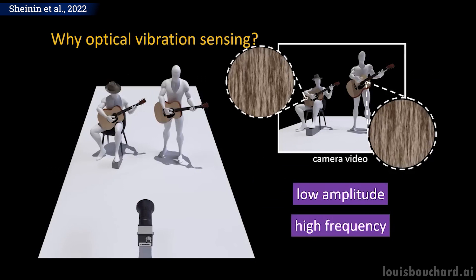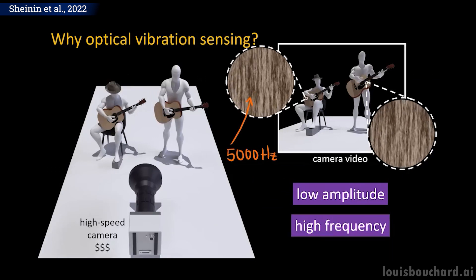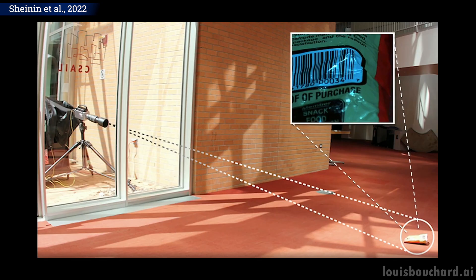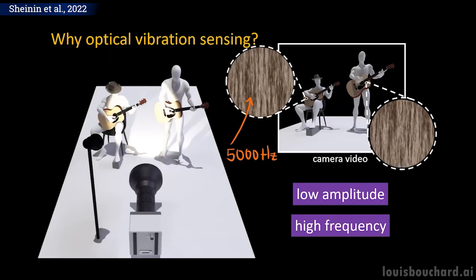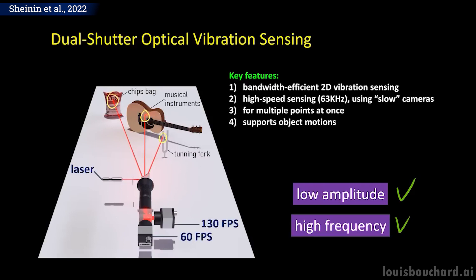Typically, this kind of spy technology, called visual vibrometry, requires perfect lighting conditions and high-speed cameras that look like a camouflaged sniper to capture high-speed vibrations of up to 63 kHz. Here, they achieve similar results with sensors built for only 60 and 130 Hz. And even better, they can process multiple objects at once. Still, this is a very challenging task requiring a lot of engineering and great ideas to make it happen.